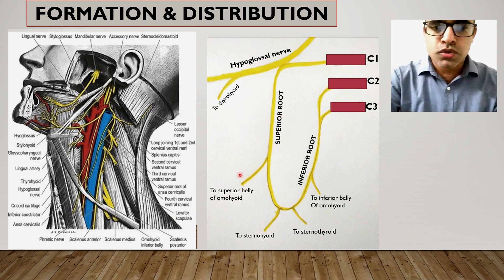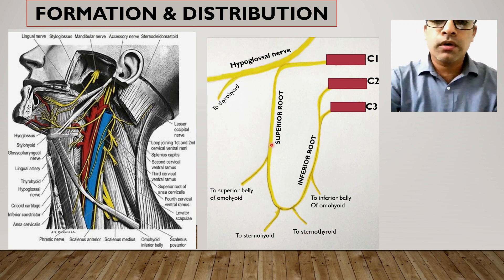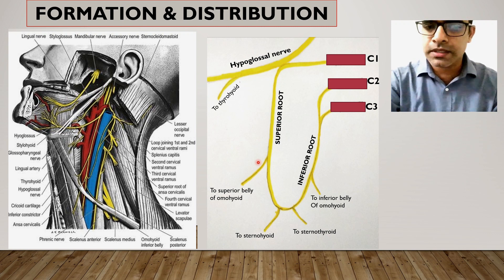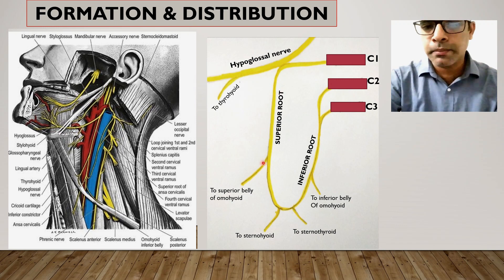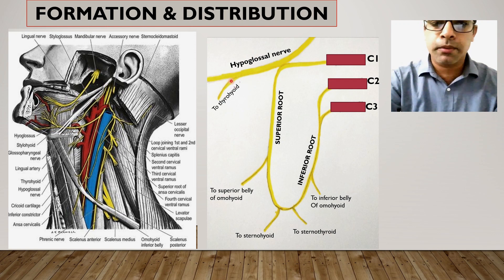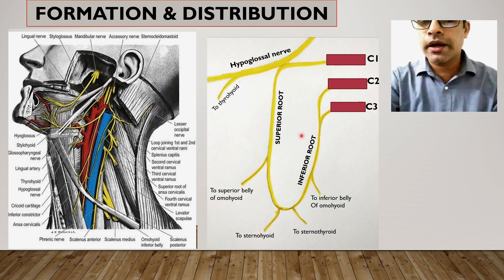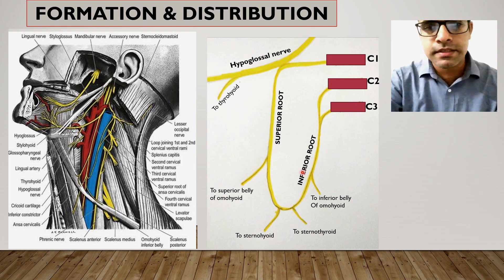To summarize the branches: the superior belly of omohyoid is supplied from the superior root; the inferior belly of omohyoid from the inferior root; and sternohyoid and sternothyroid from the ansa. You may wonder about the thyrohyoid muscle — also an infrahyoid muscle. The thyrohyoid is not supplied by the ansa or its roots. Instead, it receives a branch from the hypoglossal nerve, and those fibers also originate from C1.